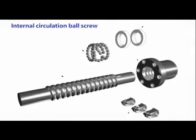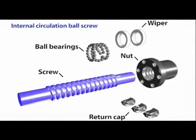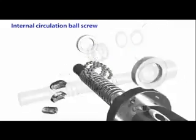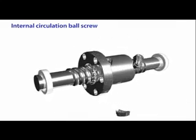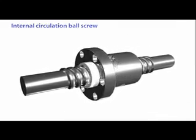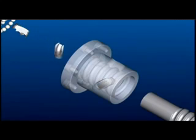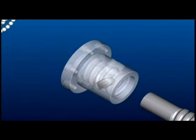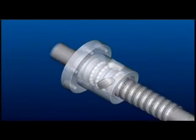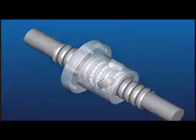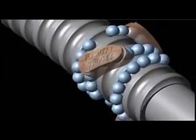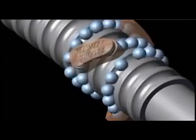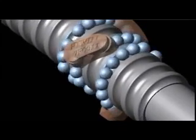Internal circulation ball screws are composed of a screw, nuts, ball bearings, return caps, and wipers. The bearings circulate in single circles. The return cap spans two adjacent bearing races, forming a single closed circuit. Because the return cap is installed within the nut, this type of ball screw is known as an internal circulation ball screw. The return cap forms a return channel for the bearings and ensures that the movement of the bearings follows a closed circuit.